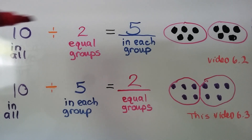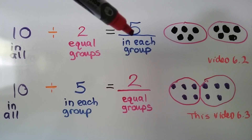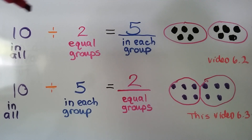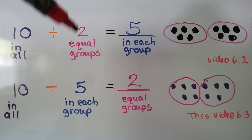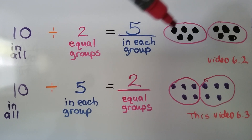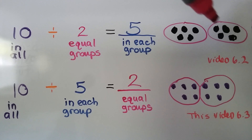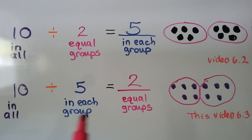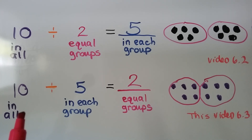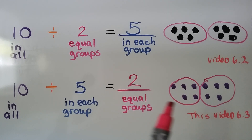To find how many are in each group, we know how many there are in all and how many groups we're supposed to have — we just need to take turns filling them. To find the number of equal groups, we know how many there are in all and how many are supposed to be in each group — we just need to count that many and put them into groups.